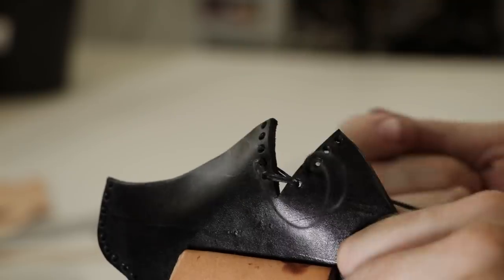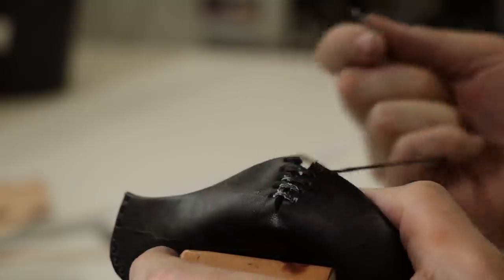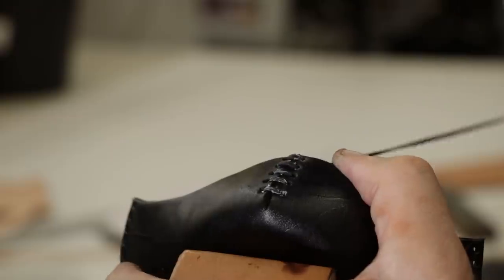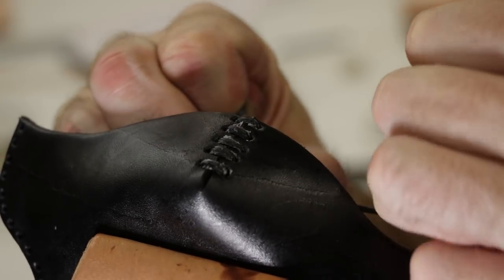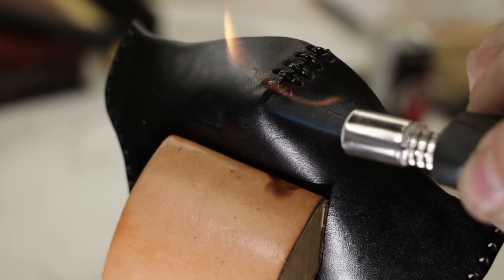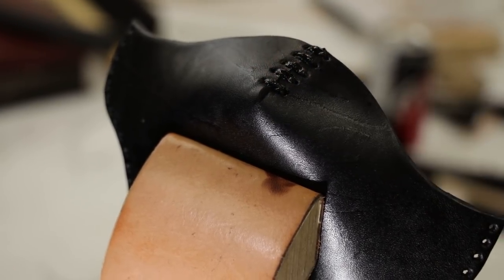I don't always use wax thread, but I'm using it this time. It's really good because once you pull certain edges together, they don't slip out as easily. And so this join, because it's curving a little bit as you pull it together, I found wax thread really useful here.